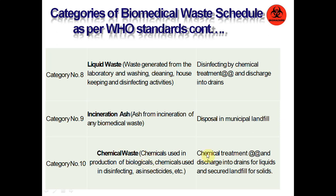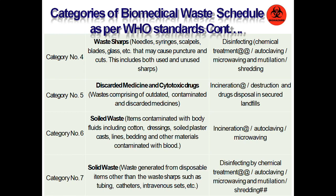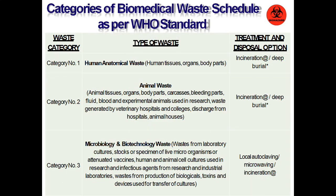Category 10 is chemical waste from production of chemicals and biological products, disposed in landfills. Many categories overlap, which can be confusing, but you mainly need to learn the names of the categories.